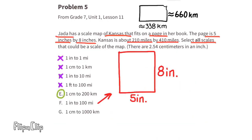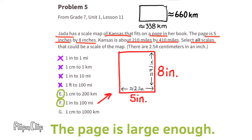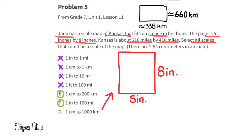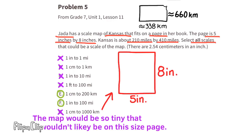Scale f: one inch to 100 miles. With one inch representing 100 miles, we would only need a map that's 2.1 inches wide and 4.1 inches tall. This page is large enough for this scale. Scale g: one centimeter to 1000 kilometers — this scale is too small; the map would be so tiny it wouldn't likely fit on this size page.